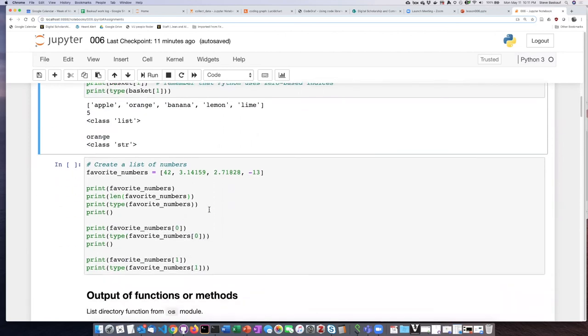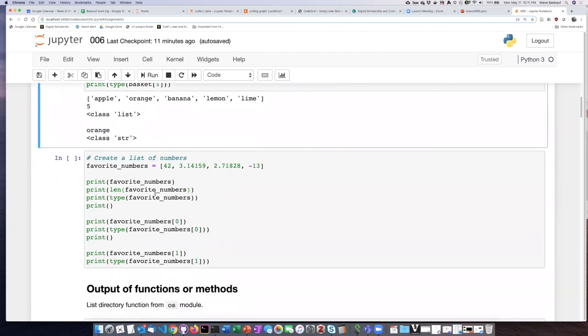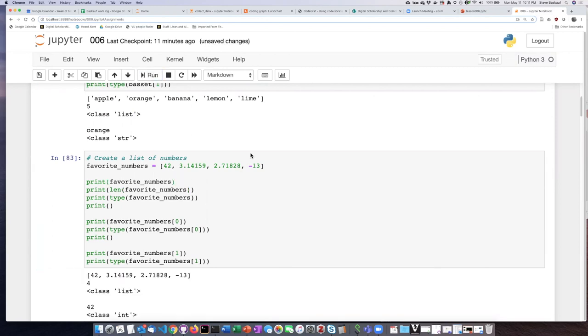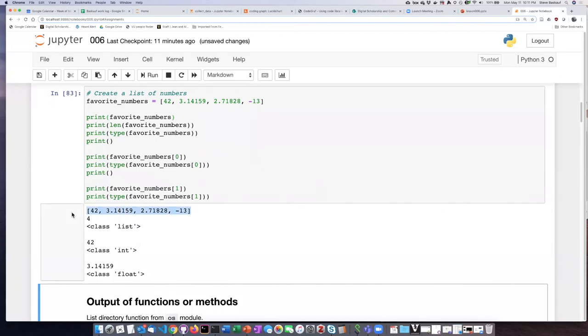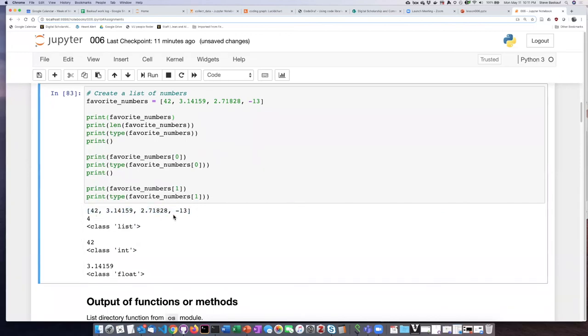Here's another example of a list. This time it's a list of numbers, so I didn't put them in quotation marks. And I basically asked the same things about this list. So let's go ahead and run that. So here I printed off the entire list. The length of this list is 4. It is a list.